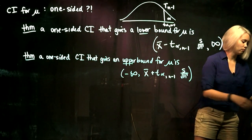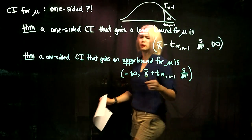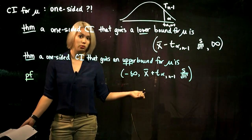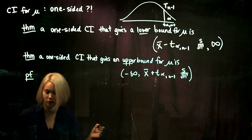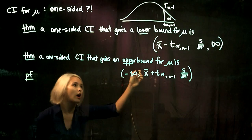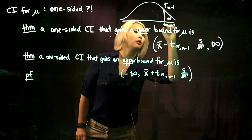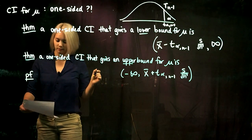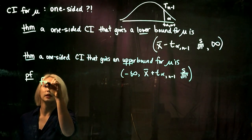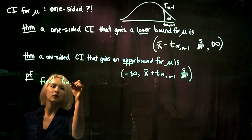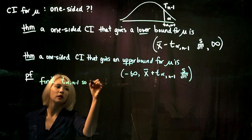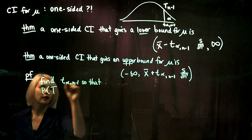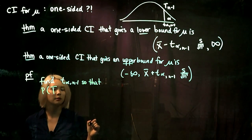These two ideas are pretty similar so we're only going to prove one of them — it's pretty much the same sort of proof as we've been doing. First, we go and find t_alpha, that quantile, so that we have alpha in the upper tail and one minus alpha in the lower tail.